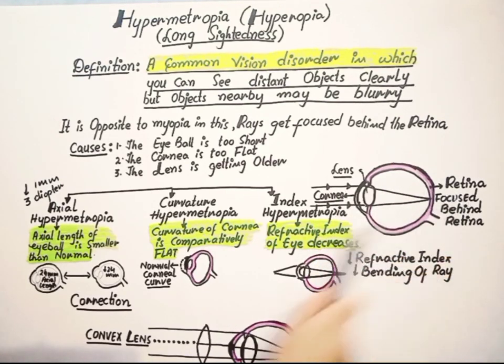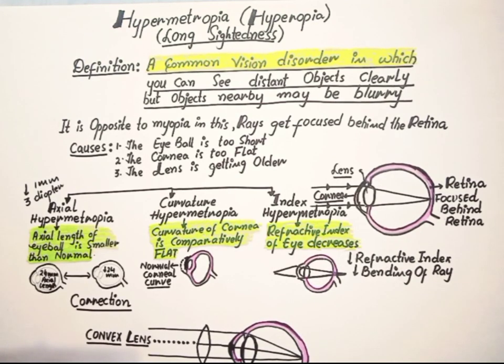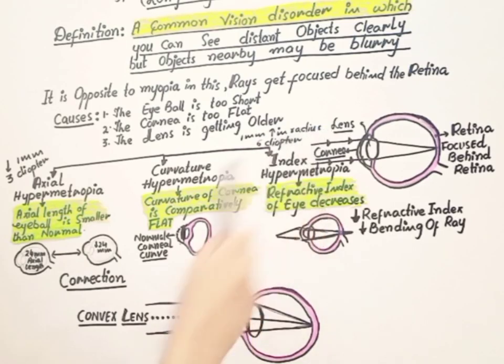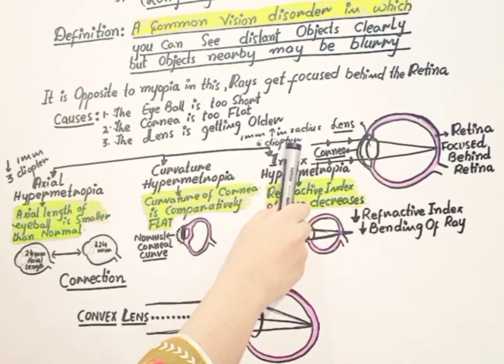So you cannot see the nearby objects and this hypermetropia condition will occur. 1 millimeter increase in radius of lens or cornea causes 6 diopters of hypermetropia to occur.